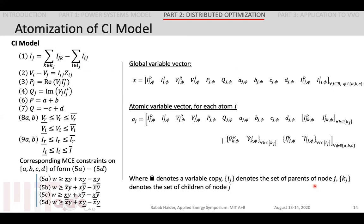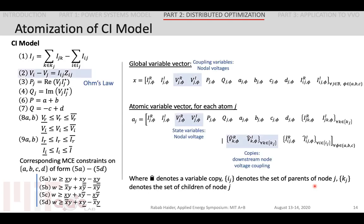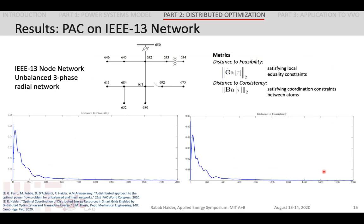We can then employ the PAC algorithm to solve the optimal power flow problem using the CI model. To do so, we must distribute the problem across agents. First, Ohm's law creates a coupling constraint on nodal voltages, and we treat this by creating copies of downstream voltages for every node, so the child node voltages are copied for node J. The second constraint, the KCL constraint, introduces coupling on the branch currents. We treat this by adding the downstream branch current to the state variable and creating copies of the upstream branch current for each node. Here we show the convergence profiles for the PAC on the IEEE 13 bus network, demonstrating that the PAC achieves feasibility and that all copied variables equal their true value, as the distance to consistency goes down to zero.